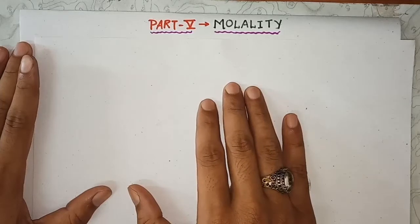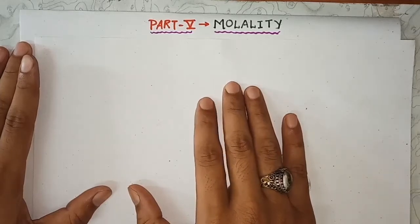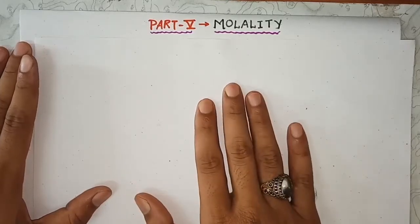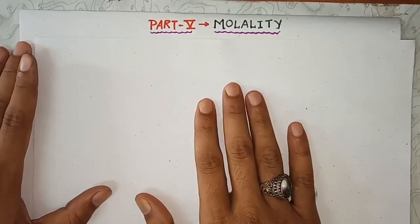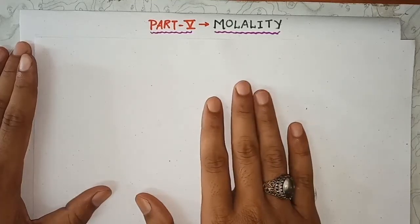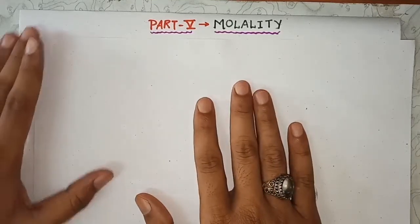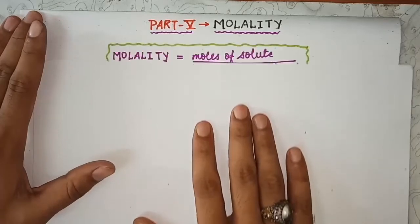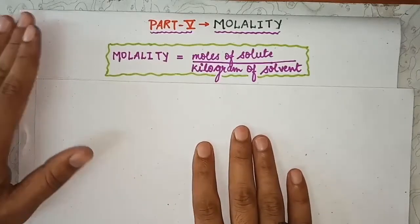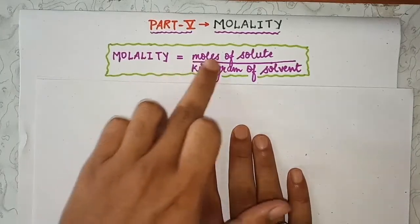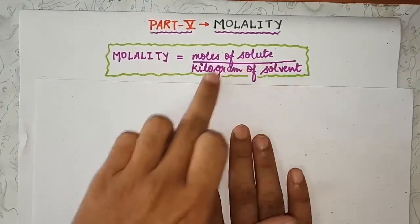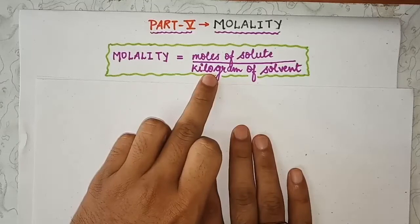Hello friends, in this video we will learn about molality, that is part 5. Molality is defined as moles of solute per kilogram of solvent, which can be represented as: molality is equivalent to moles of solute divided by kilogram of solvent.